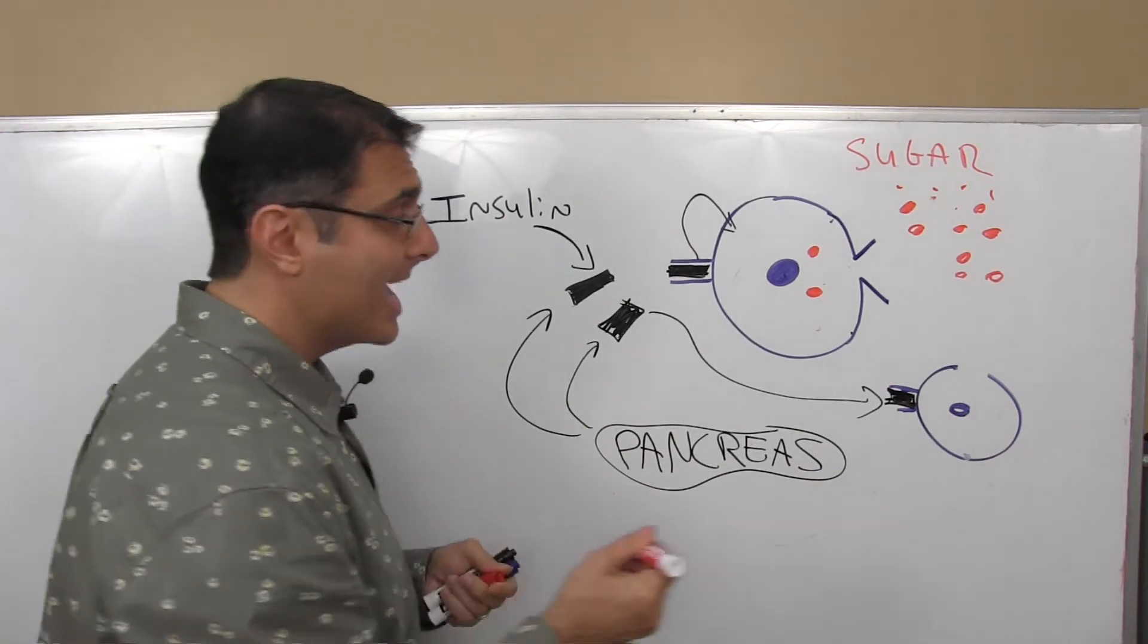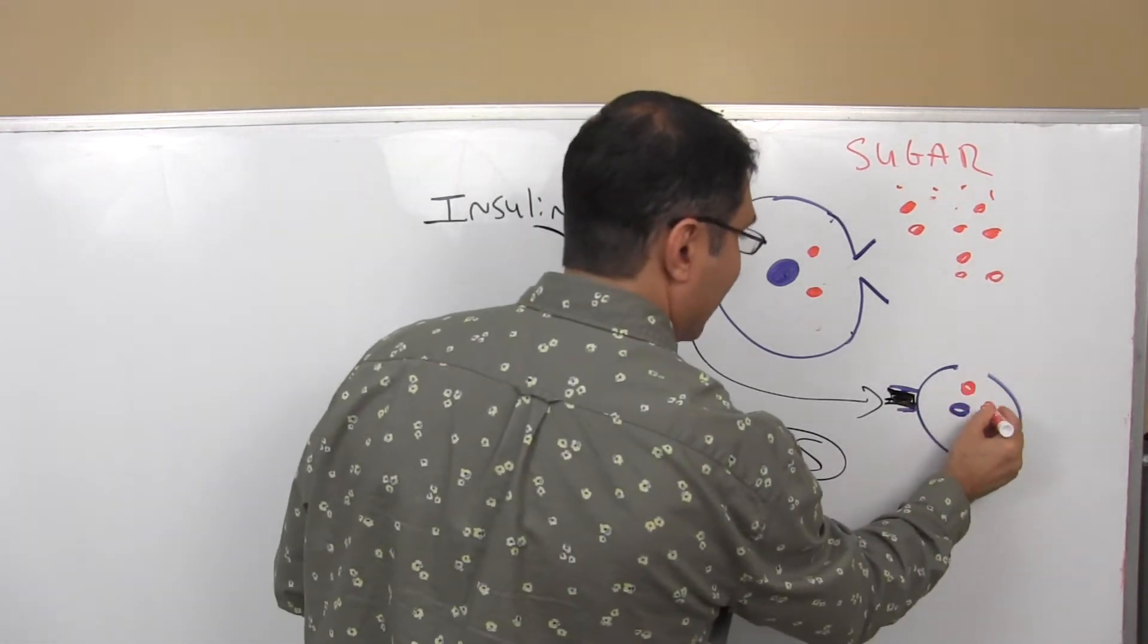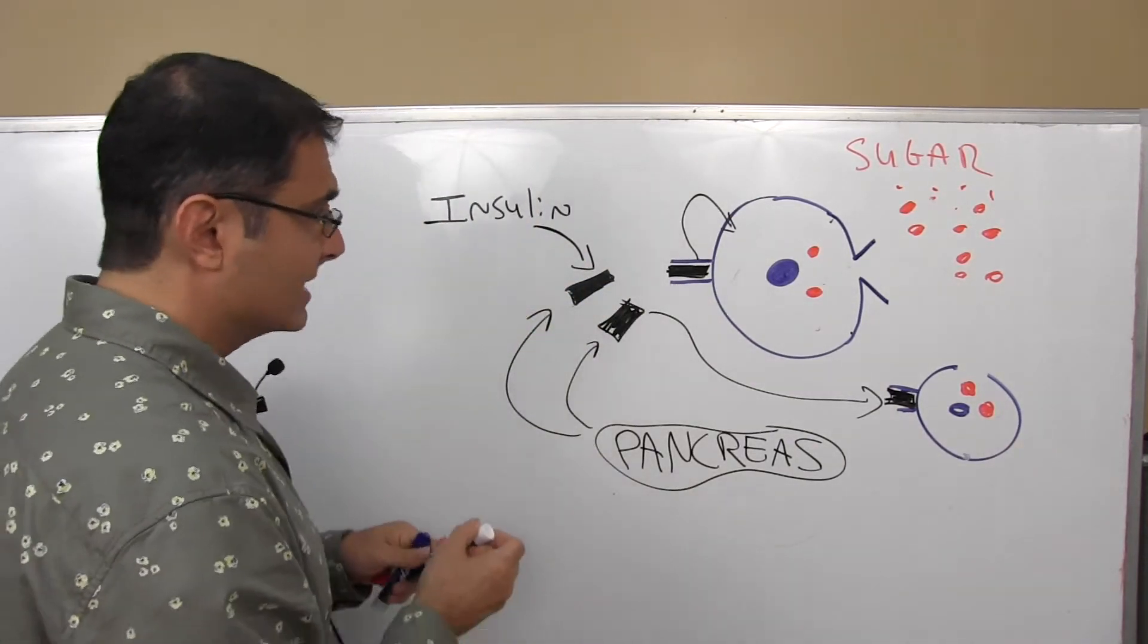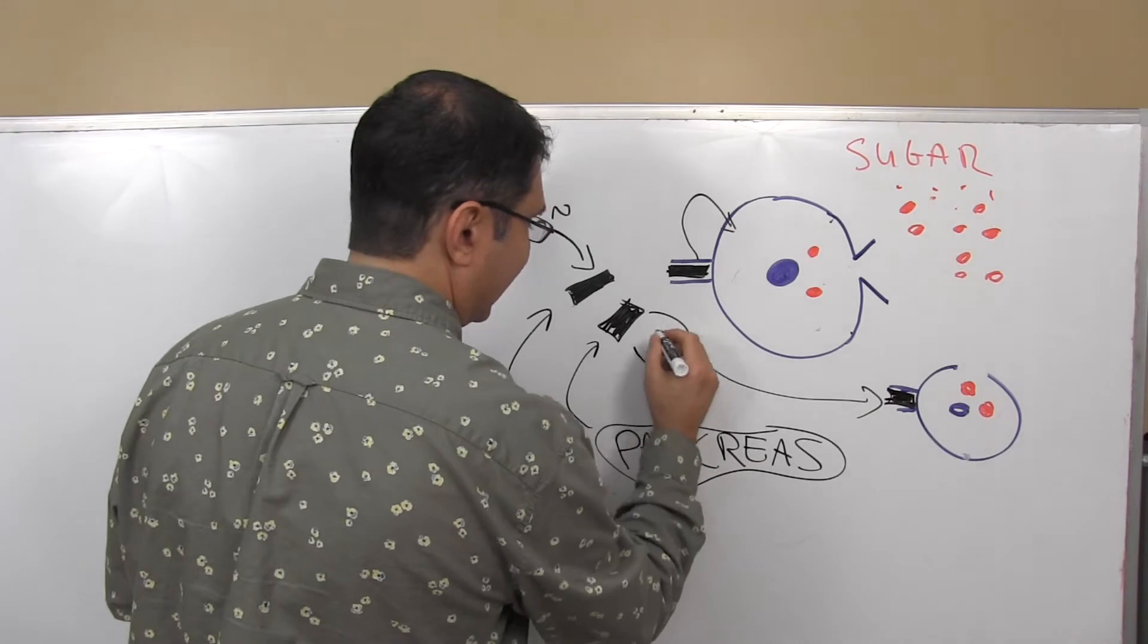So guess what's happening now? Now we're getting another message because the pancreas goes, man, the blood sugar is still high. What's going on? So the pancreas makes more insulin and more insulin and more insulin.